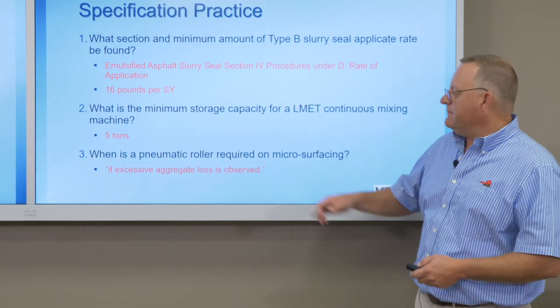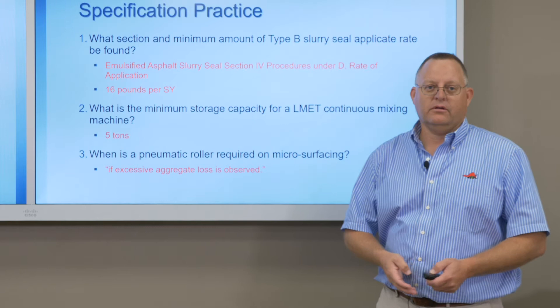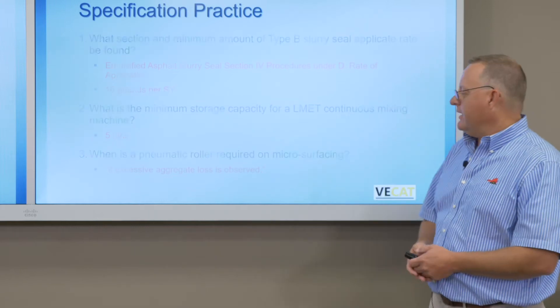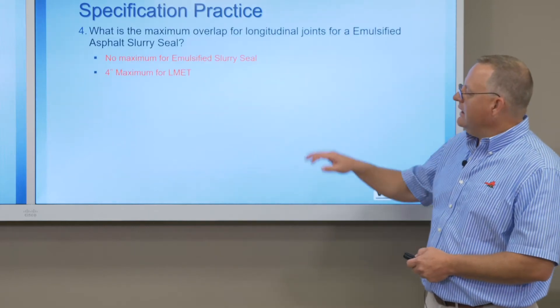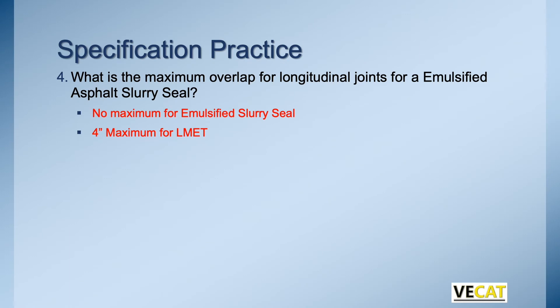Do we need to put a pneumatic tire roller on that latex or microsurfacing? What is the maximum overlap? There is no maximum defined for emulsified slurry seal within the spec. But for latex, it's very clear — it says a four-inch maximum. You'll find that in the special provisions.